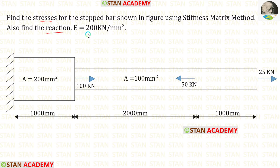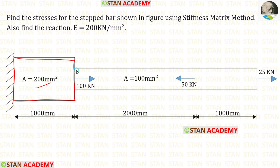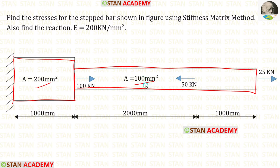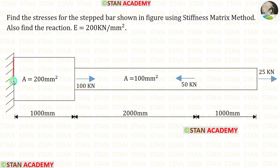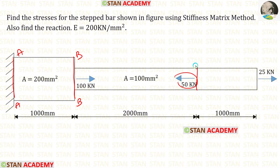The Young's modulus is given as 200 kilo Newton per millimeter square. The first bar has an area of 200 millimeter square and the second bar has an area of 100 millimeter square. Let us name the sections as AA, BB, and here we have a load of 50 kilo Newton. So here also we have to make a section, named CC, and this section as DD.